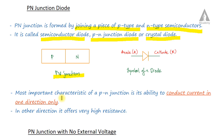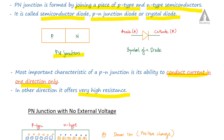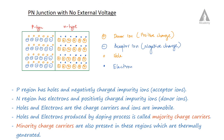The most important characteristic of the PN junction diode is its ability to conduct in only one direction. In the other direction, it offers very high resistance.